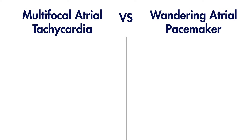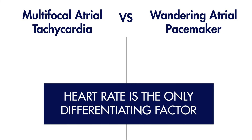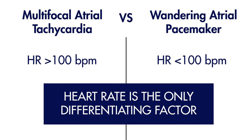Because the pathophysiology between wandering atrial pacemakers and multifocal atrial tachycardias is the same, the only differentiating criteria between these is heart rate. In cases where heart rate is greater than 100 beats per minute, we call these multifocal atrial tachycardias. And when heart rate is less than 100 beats per minute, these rhythms are called wandering atrial pacemakers.